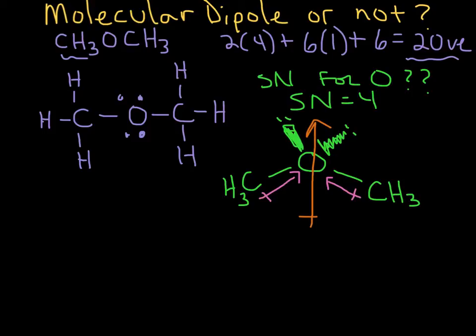Because remember, it's not linear. Even though the way we've drawn it here, that looks linear because I put one lone pair above the oxygen and one lone pair below the oxygen. And you'll see that a lot. But remember, that is bent. That shape around that oxygen center in this molecule is bent.